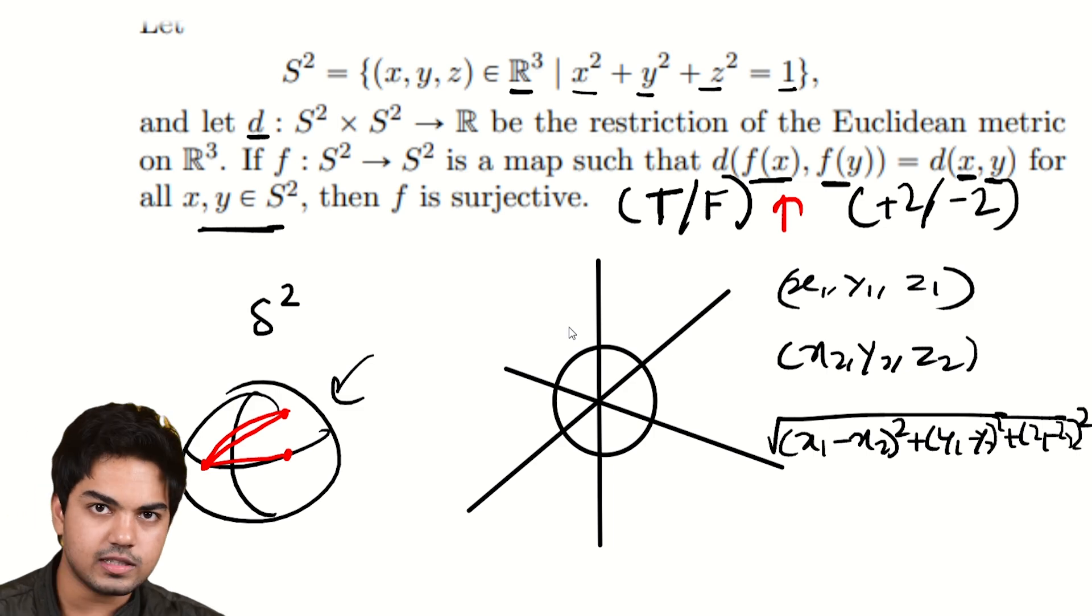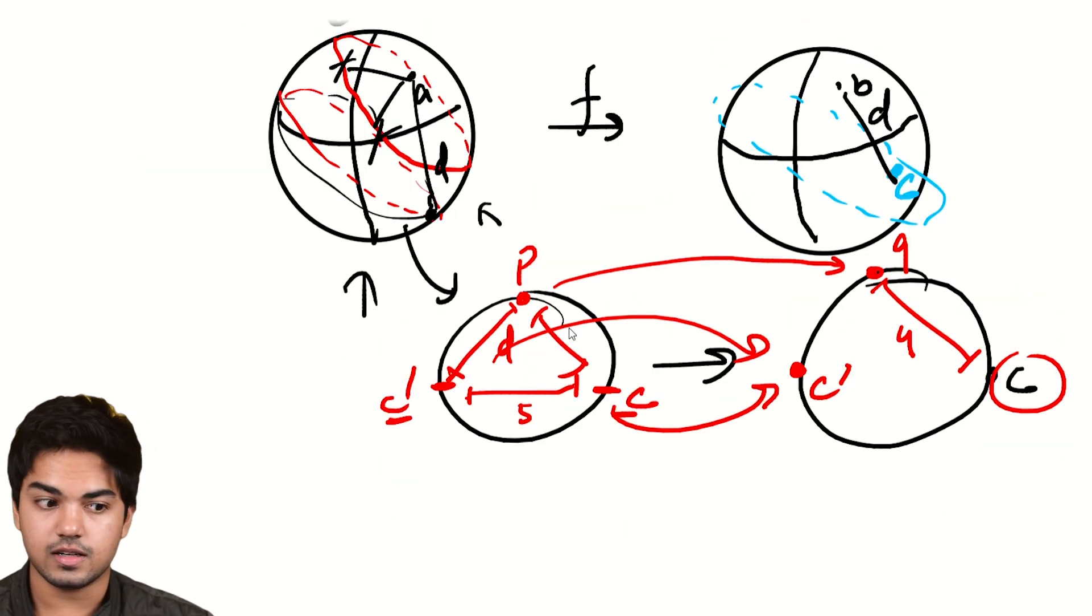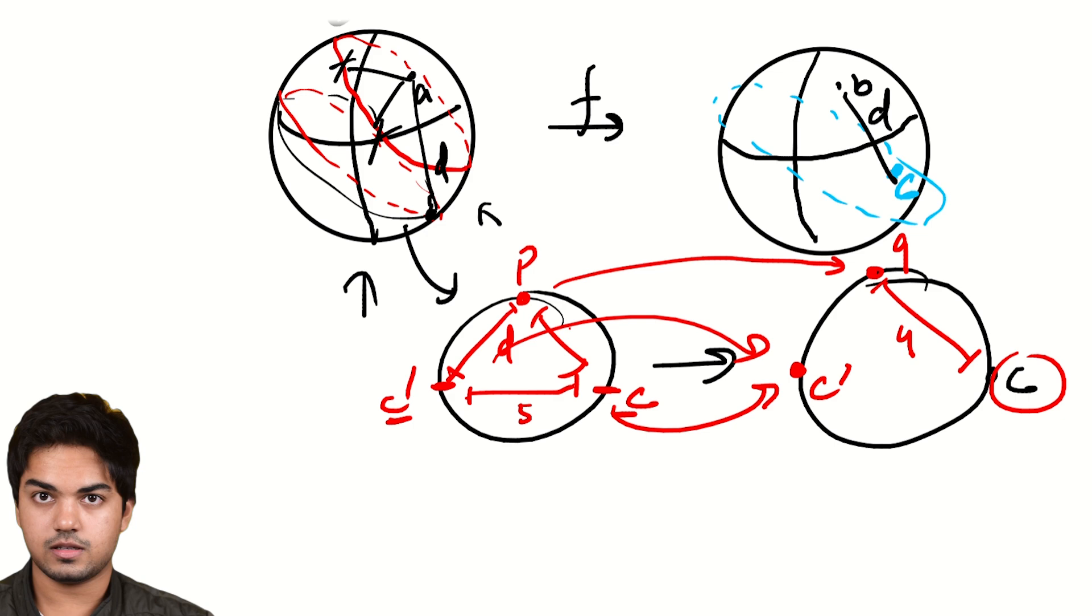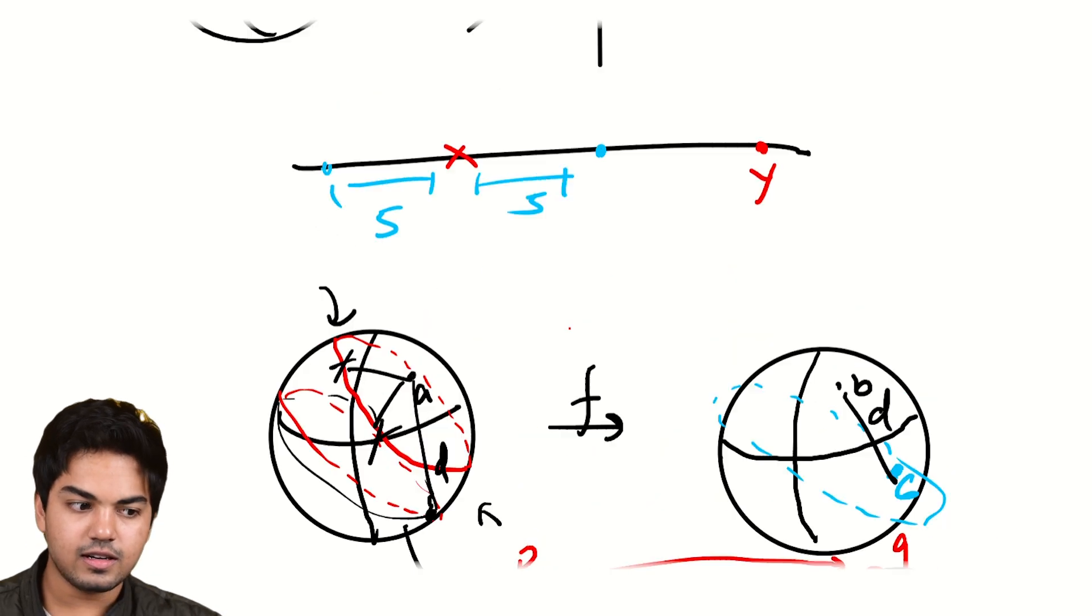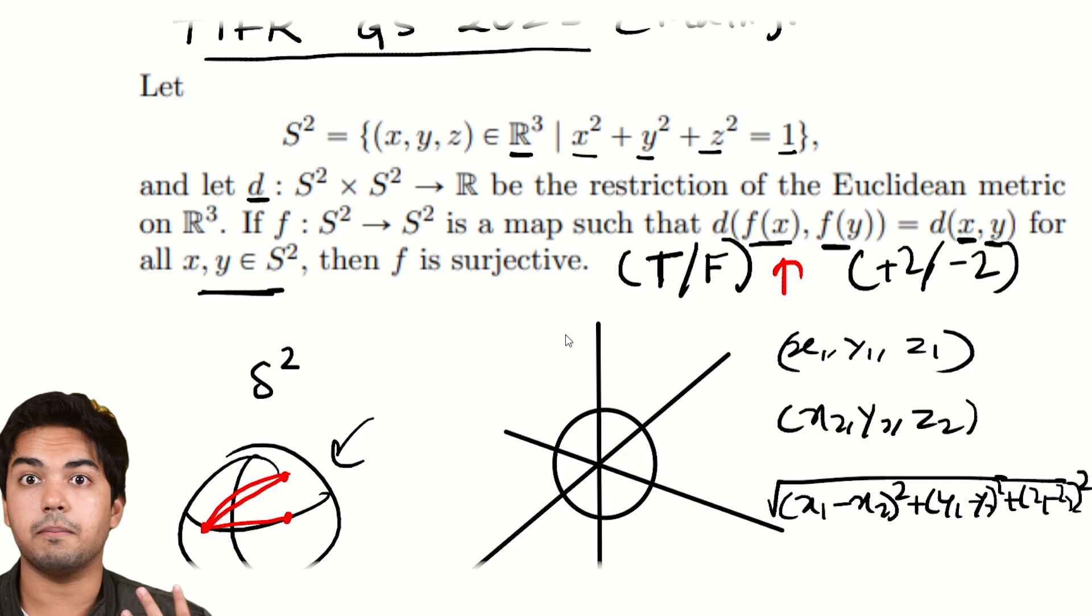So isometries are obviously injective. And now it has proven for us that they're surjective as well. C cannot be missed because C and C' can't both map to the same point. Hence, C cannot be missed.